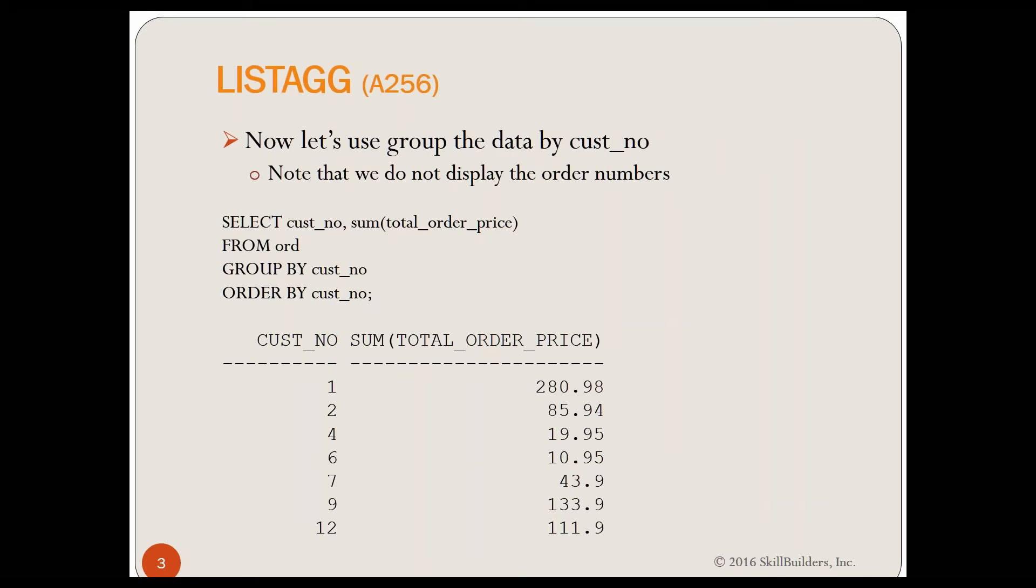Very simple. Normal SELECT, CUSNO and Sum of Total Order Price, GROUP BY the CUSNO, and we're going to order it by CUSNO. And there's your result. There's your 280.98.